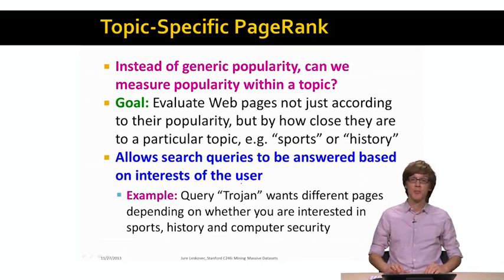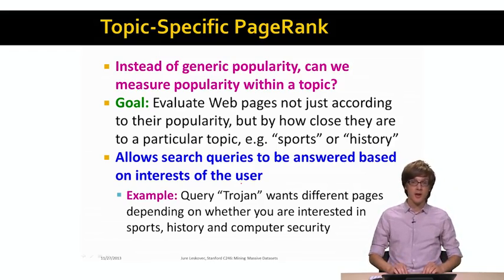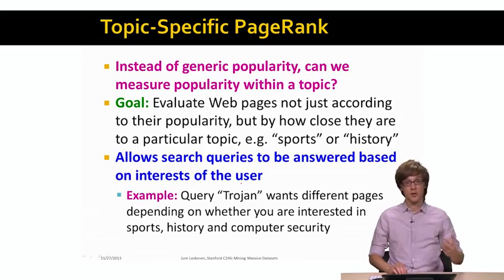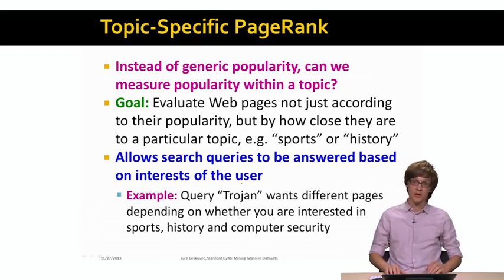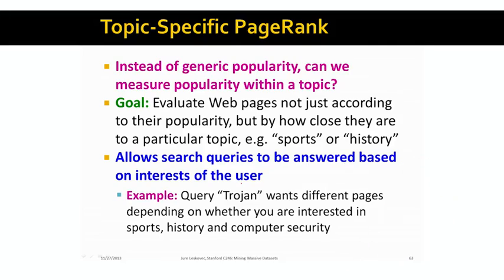Of course, if you have the personalized PageRank or topic-specific PageRank way of measuring the importance of a page, we could basically show the user a given ranking depending on what the user wants. In particular, there can be many queries that are ambiguous. For example, a query 'Trojan' could have very different relevant pages depending on the topic — Trojans could mean a sports team, something different if you're interested in history, or something very different if you're interested in internet security. So the idea is that we could compute different importance scores for different web pages based on their relation to a given topic.